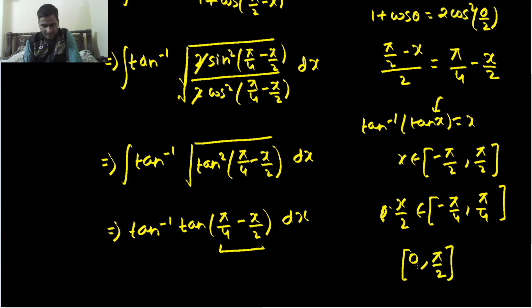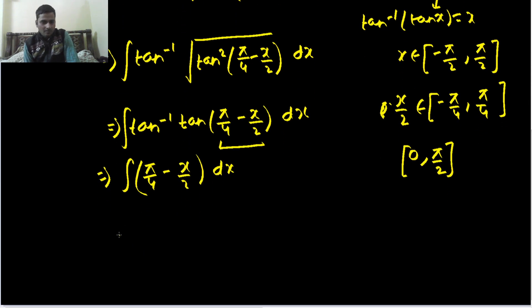So this lies between 0 to π/2. Obviously this is between -π/2 to π/2. So we can directly in the next step write this as integral of π/4 - x/2 dx. Now easy to integrate.